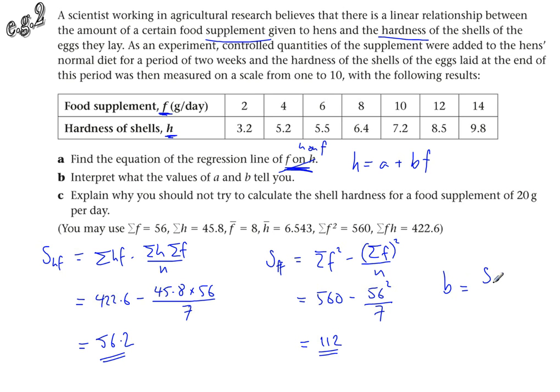Let's work out what b is. B is equal to s_hf divided by s_ff. That's 56.2 divided by 112, which gives me 0.501785 and it goes on. Six significant figures is tons because I'm not going to keep all of those, but I want them all for now.